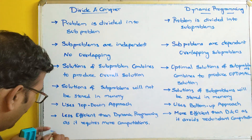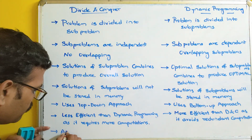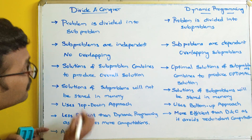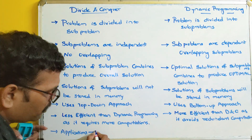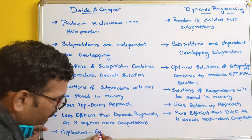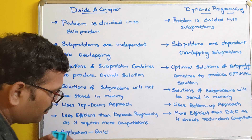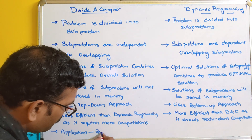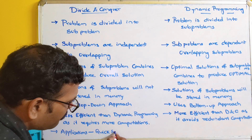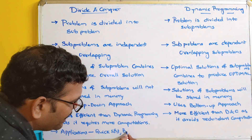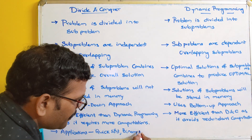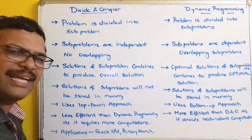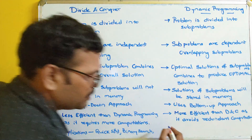Dynamic programming is more efficient than divide and conquer as it avoids redundant computations — once a computation is done and stored in memory, we need not calculate it again; we can reuse the existing result. Applications of divide and conquer include quicksort, binary search, and merge sort.